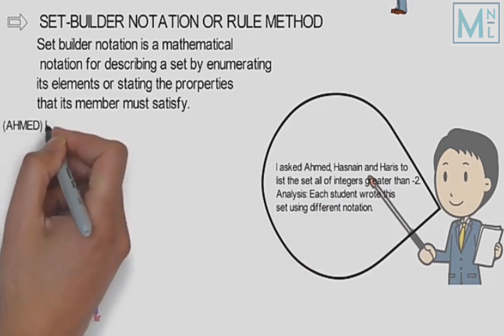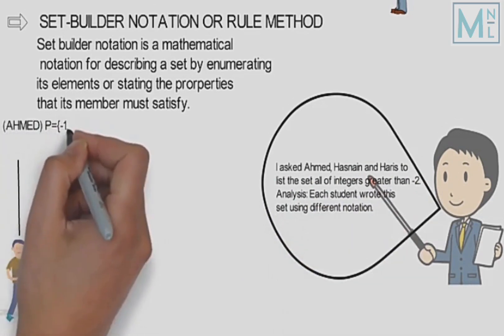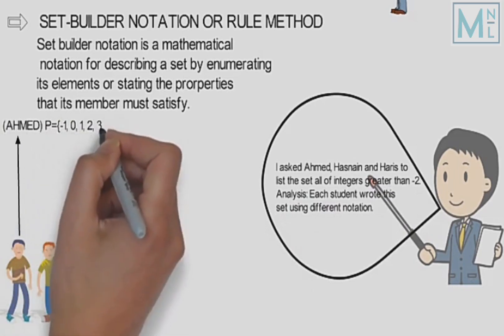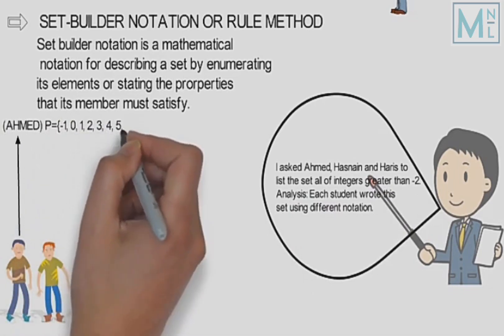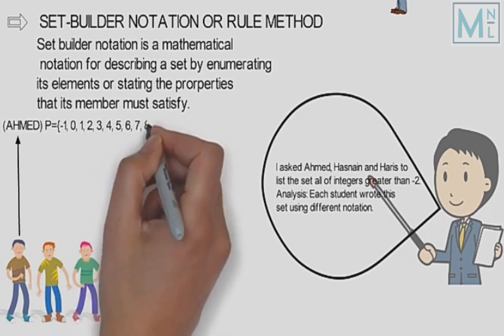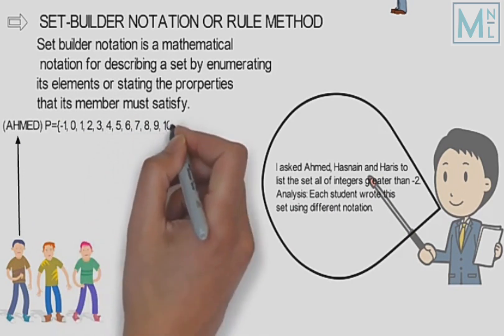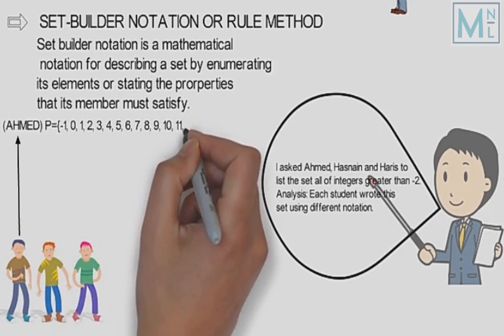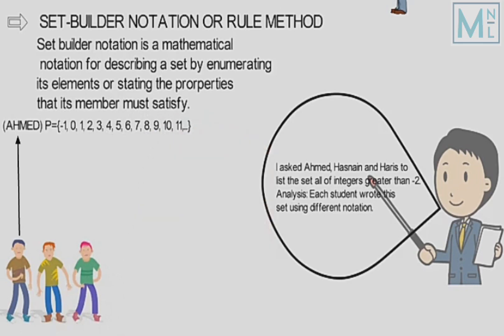Ahmad ne set banaya: P is equal to set bracket minus one, zero, one, two, three, four, five, six, seven, eight, nine, ten, eleven, and so on, jo ke tabular form mein banaya hai.